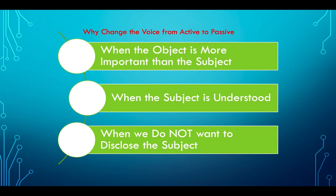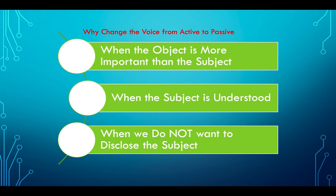The third situation is very interesting — when we do not want to disclose the subject. This happens when we are talking about an unpleasant decision. Suppose the Prime Minister comes up with the idea that we should be made to pay more taxes. The idea was the Prime Minister's, but would he like that to come to the public? So instead, passive form is used: 'It was decided in the meeting' — who decided it? We don't say anything about that.